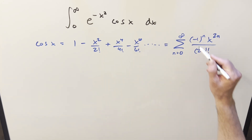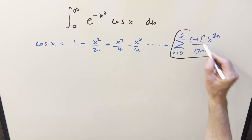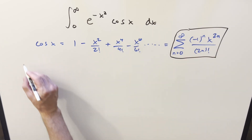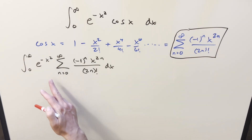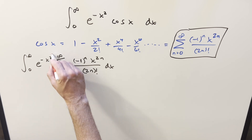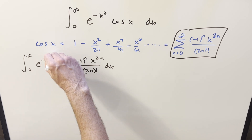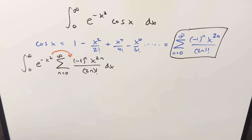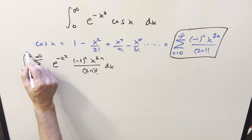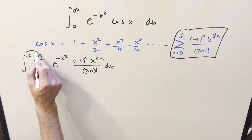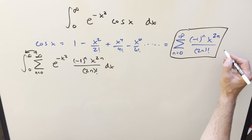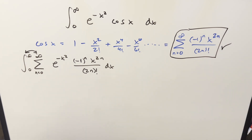Let's take this expression and stick it back into the integral. I want to get everything together, so let me distribute inside the sum and rewrite it. Then let's swap the integral with the sum — we can do this because we're working with power series, so we have absolute convergence.